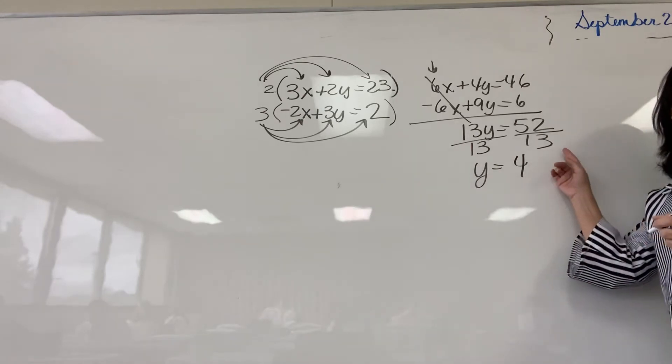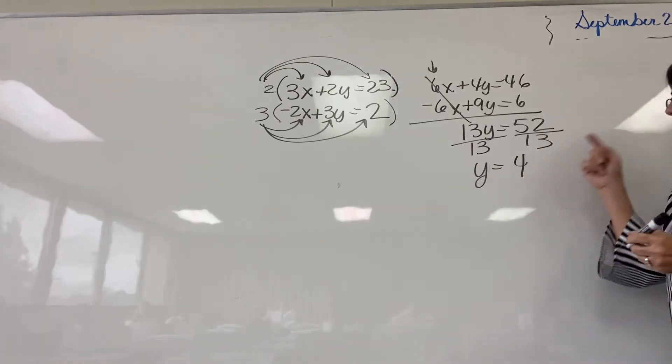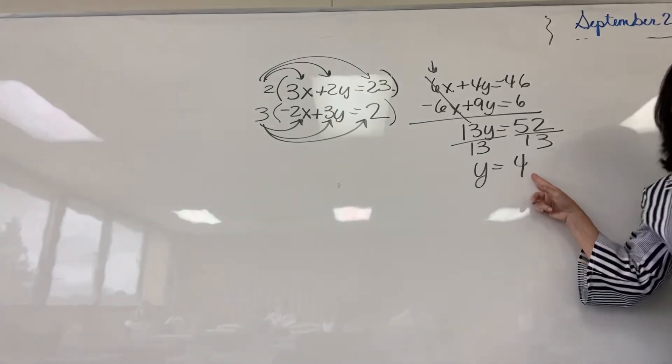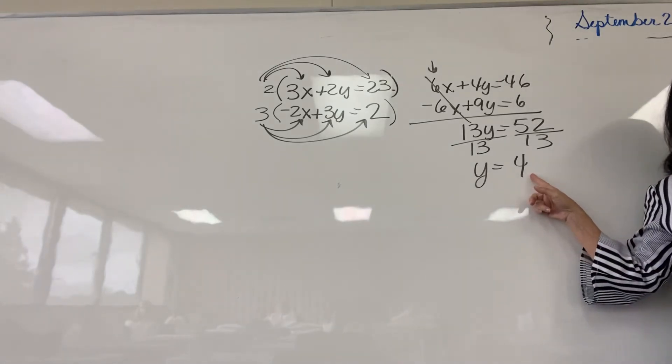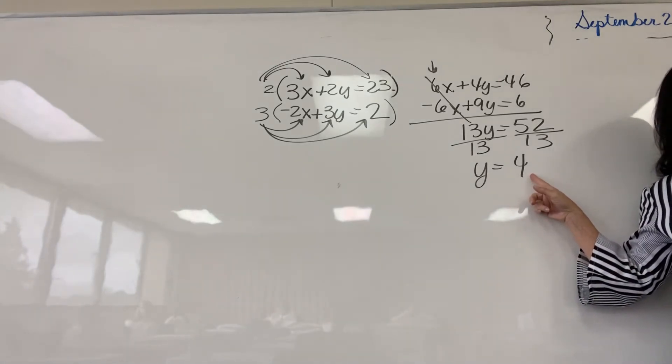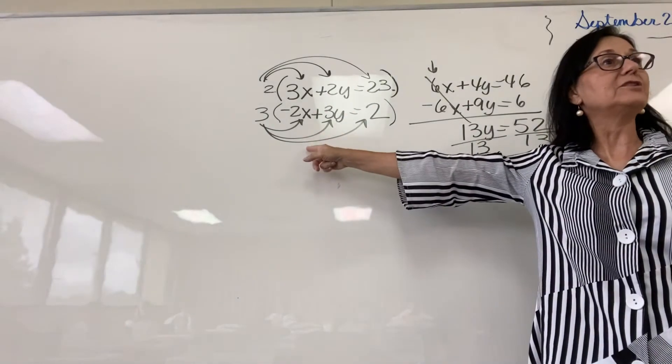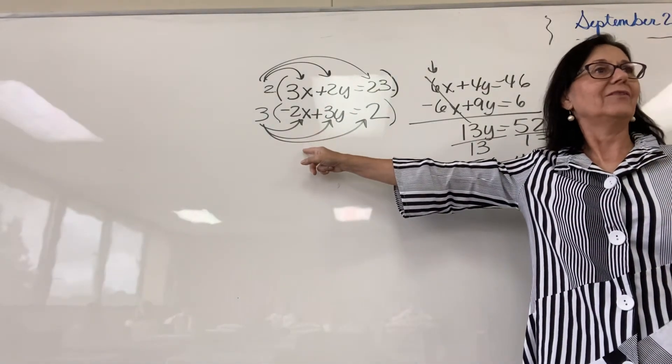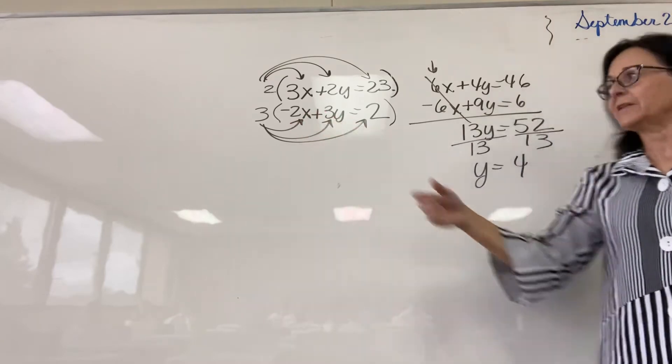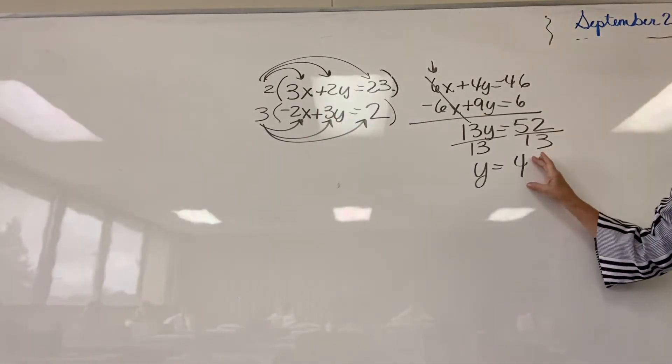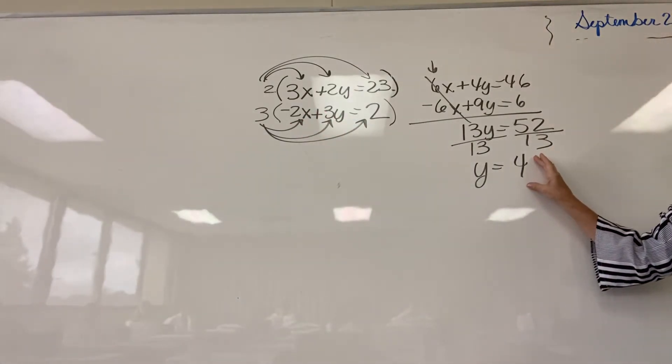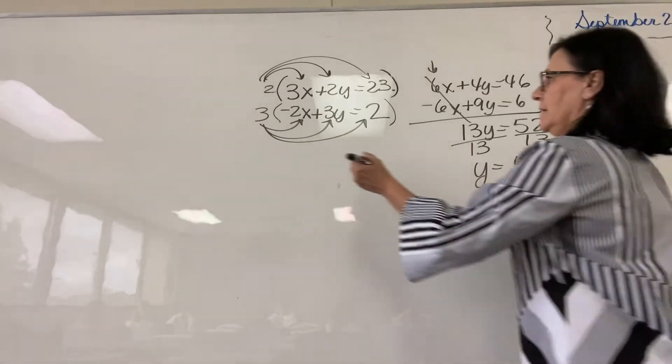Now, am I done? What must I do? One of the first original equations. Does it matter? I just choose one. I typically just choose the easiest one. I'm probably going to choose the second one. The numbers are smaller. It doesn't matter which one you choose.